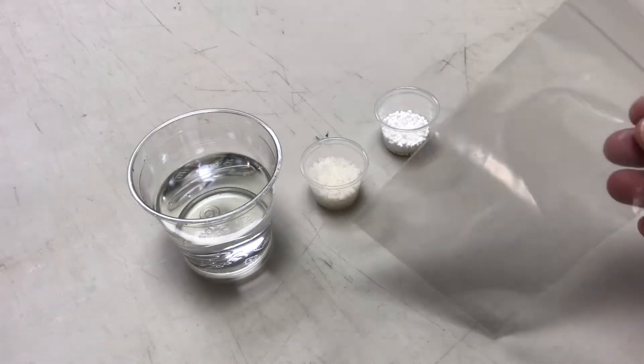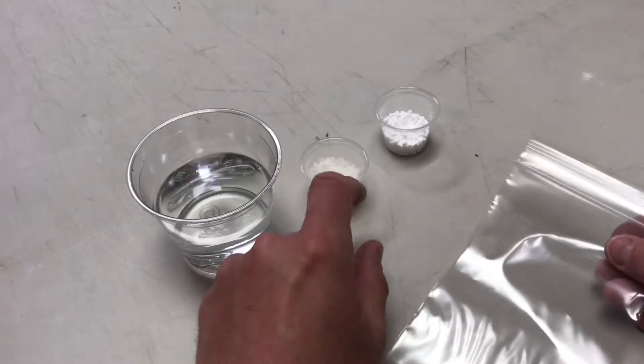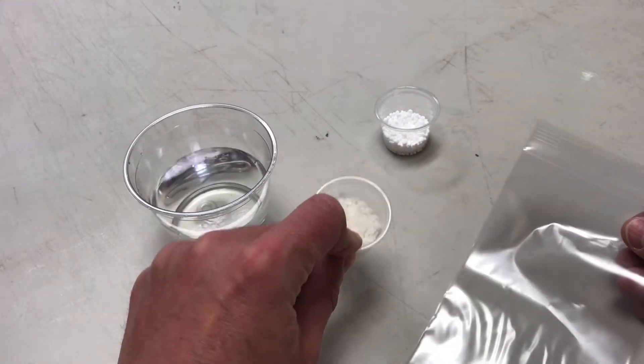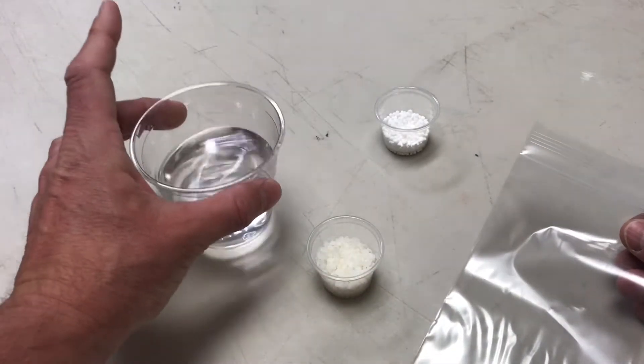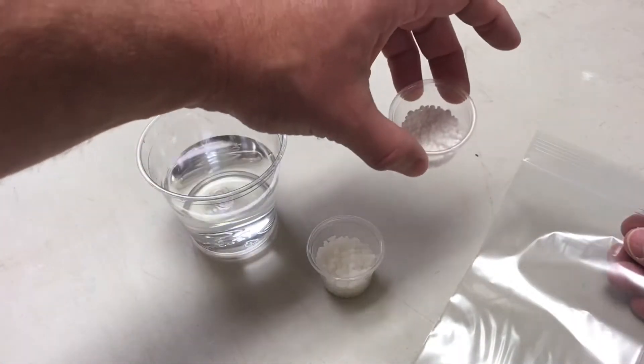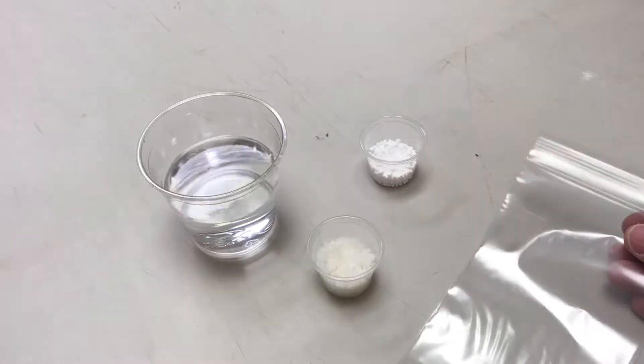We're going to take this baggie and fill it with these super absorbent polymers, these little crystals that are going to absorb our water. Once we get that going and set up, we're then going to add calcium chloride. There's about a tablespoon of each of these.